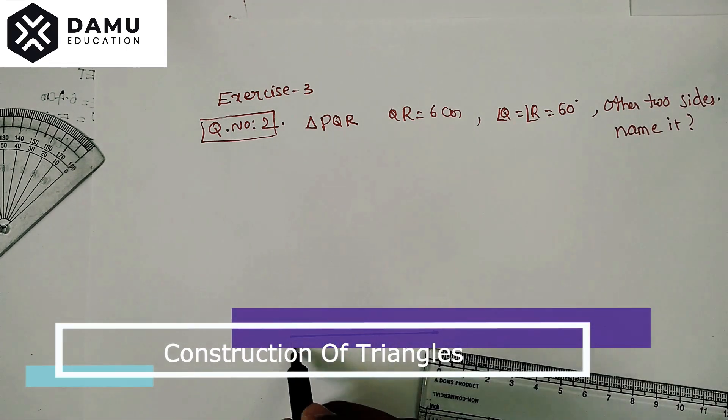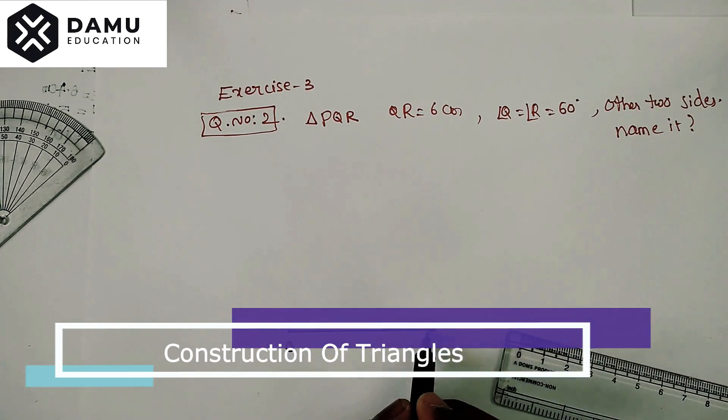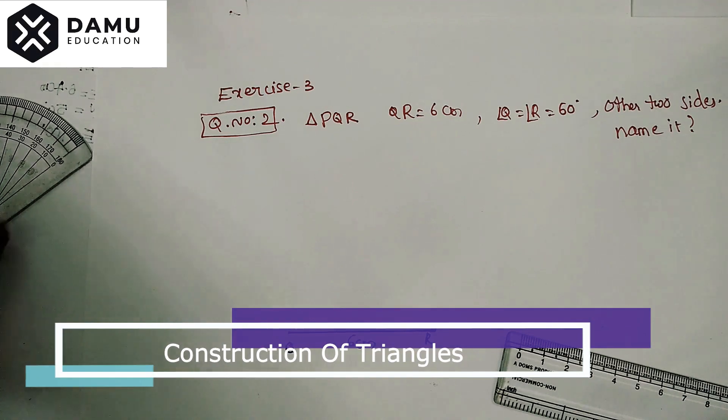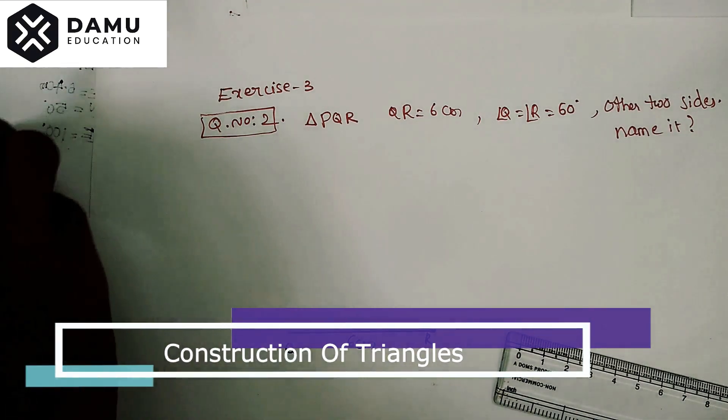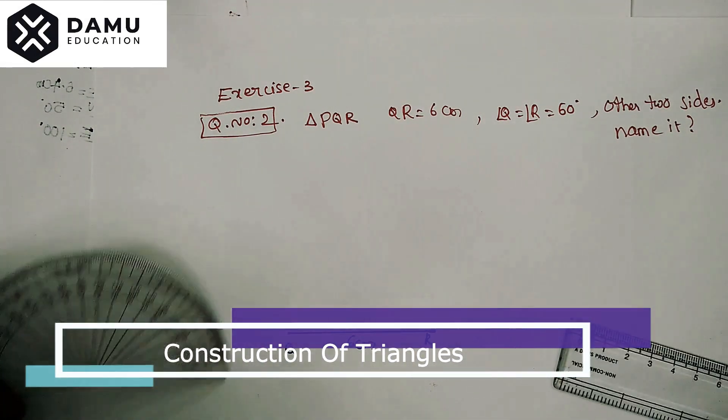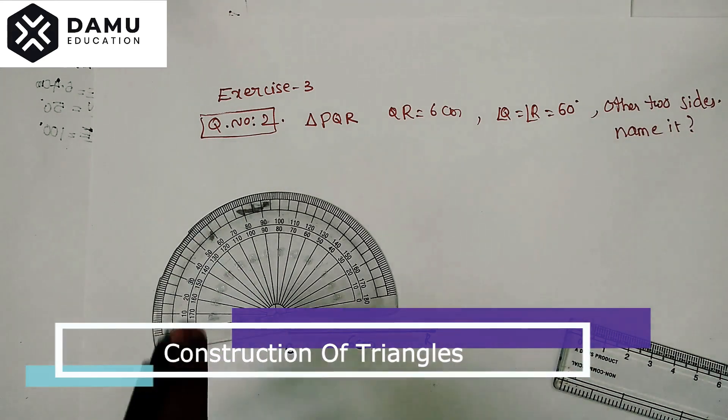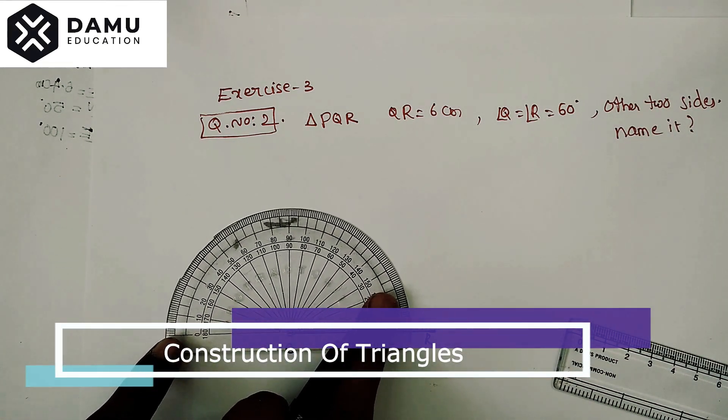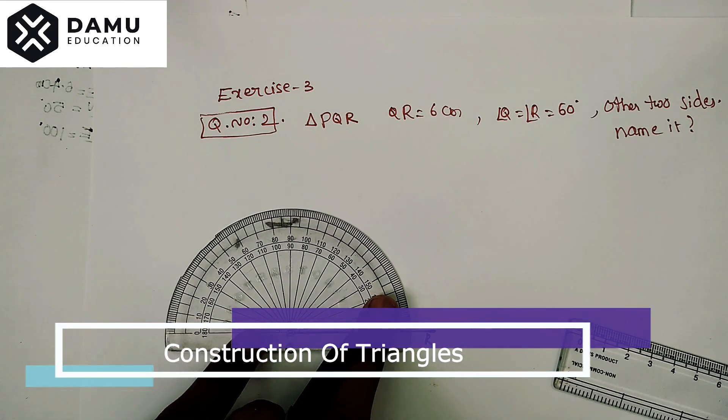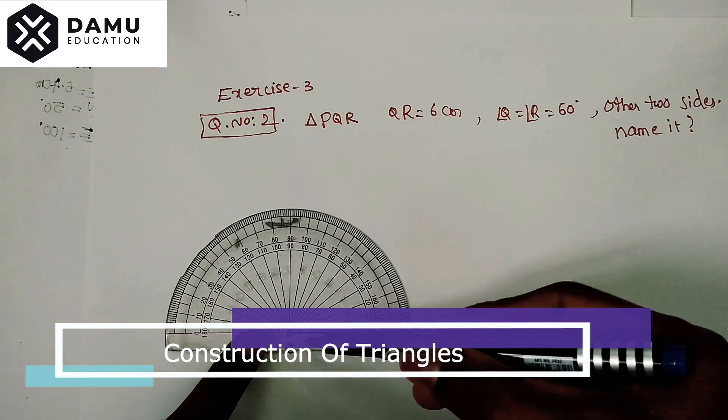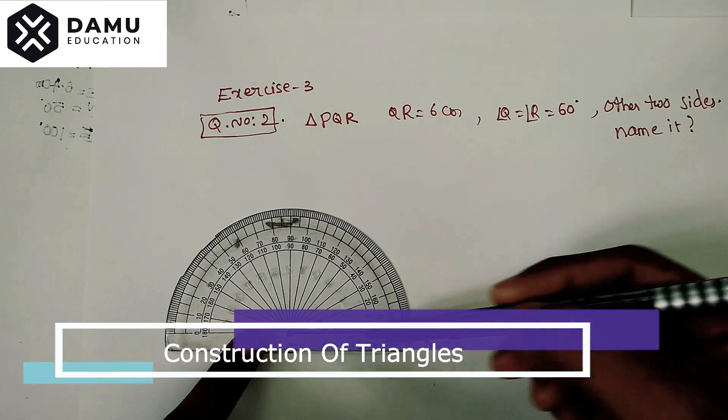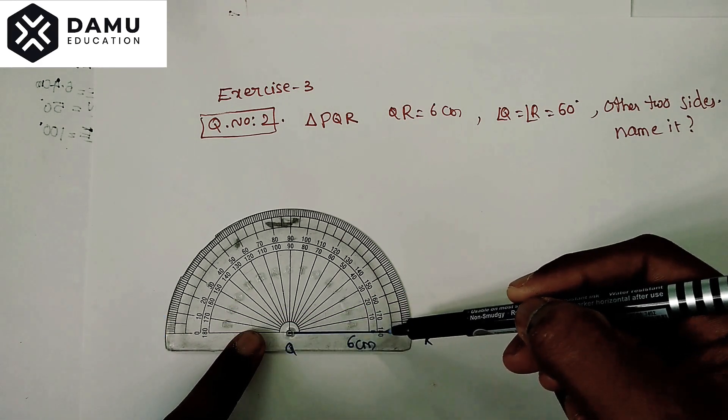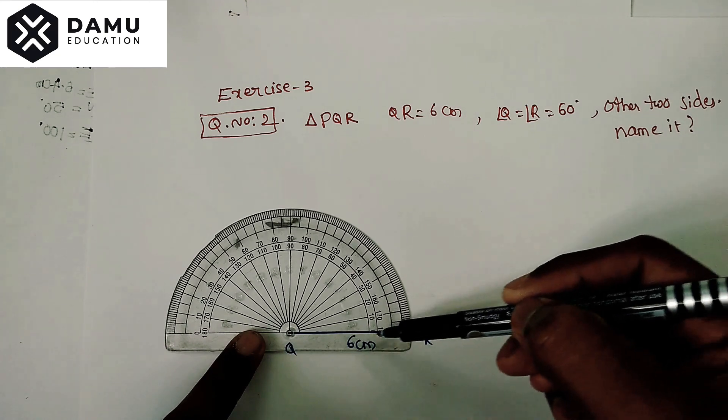Measure angle at angle Q and angle R with 60 degrees. So place your protractor here, midpoint of protractor with coincidence of this line. We are measuring angle from this line, so you have to coincide this bottom line 0 degrees with this line.